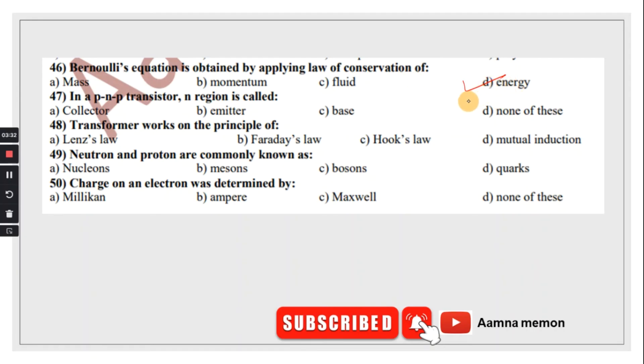In a PNP transistor, N region is called the base. Transformer works on the principle of Faraday's law. Neutron and proton are commonly known as nucleons. Charge on electron was determined by Robert Millikan. Hope you understand. Thank you for watching.